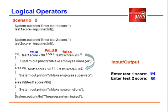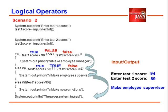Is test one score greater than 90? That is still true. Test two score greater than 90? That's still false. Because this is logical OR operator, so the entire condition is true. So we make our employee supervisor. Then after that it will proceed on the last line, the program terminates.